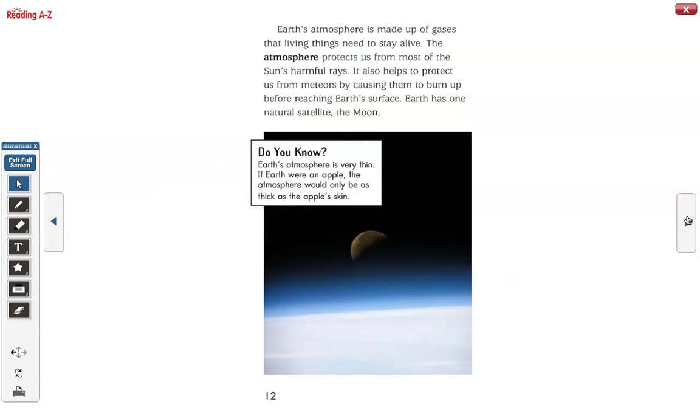Earth's atmosphere is made up of gases that living things need to stay alive. The atmosphere protects us from most of the Sun's harmful rays. It also helps to protect us from meteors by causing them to burn up before reaching Earth's surface. Earth has one natural satellite, the Moon. Do you know? Earth's atmosphere is very thin. If Earth were an apple, the atmosphere would only be as thick as the apple's skin.